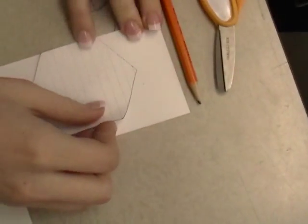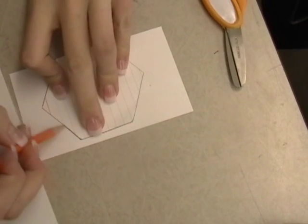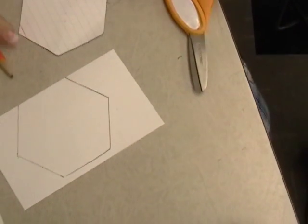What you do is trace the stencil onto a smaller piece of paper. Then you cut out the stencil.